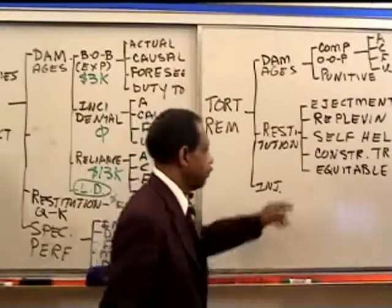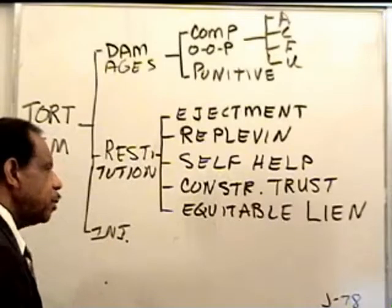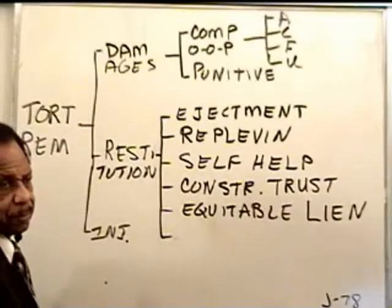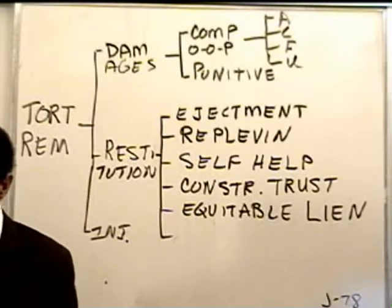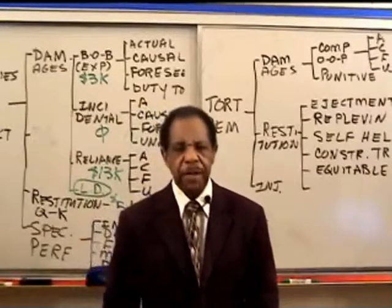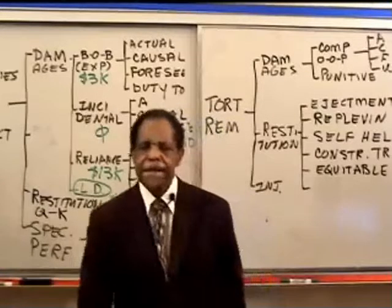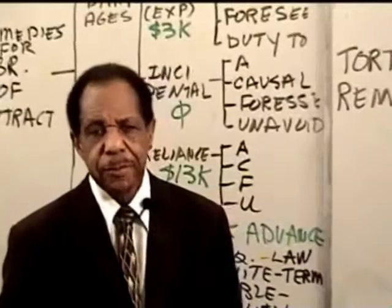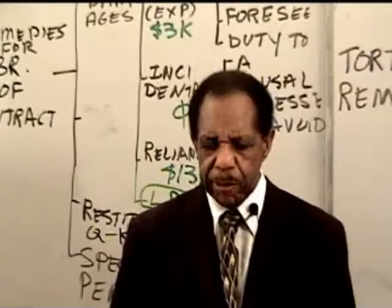So equitable lien and constructive trust are devices you can use to get your property back. What else can you use? Consider this situation: you have decided to have me beaten up, so you hired Joe and paid Joe $1,000, and said: Joe, go beat up Emerson. Joe goes and beats up Emerson and gets $1,000 from you.